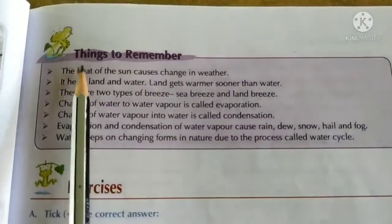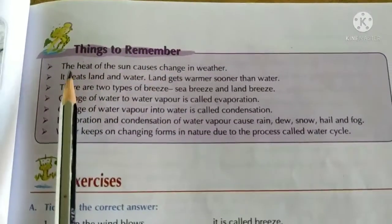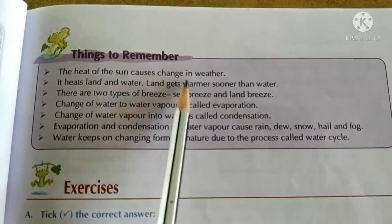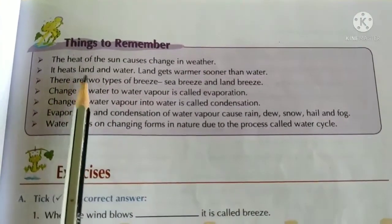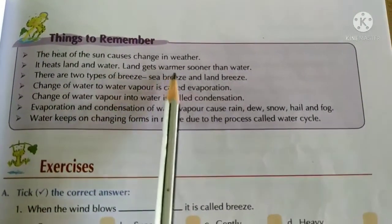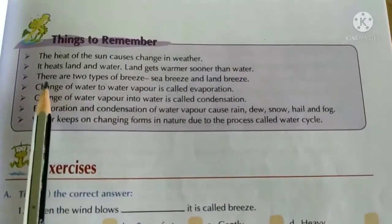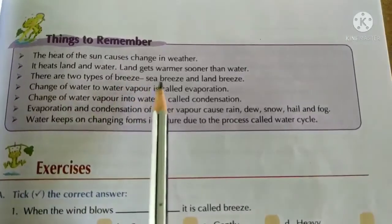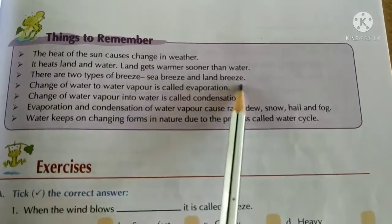The important points to remember from the chapter are: the heat of the sun causes change in weather — it heats land and water. Land gets warmer sooner than water. There are two types of breeze: sea breeze and land breeze.